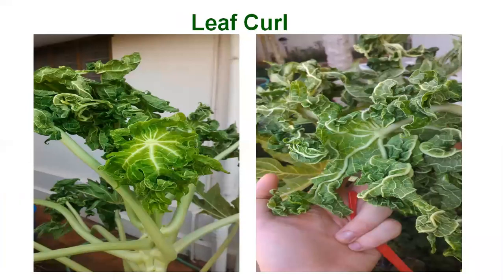The next disease is leaf curl of papaya. This is a viral disease and the causal organism is Papaya Leaf Curl Virus. The leaf curl pathogen basically originates from the planting material and may also be transmitted by a vector. The major vector responsible for transmission of leaf curl is the whitefly, Bemisia tabaci.